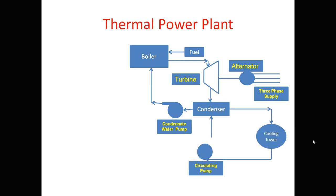As the steam passes through the turbine, it goes to the condenser, where the heat energy is condensed — that means it is cooled down. That steam is passed through cooling towers so it is cooled down and finally converted into water. This is the circulating pump, and the same water passes through the condenser.